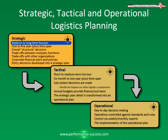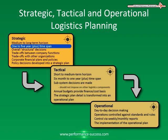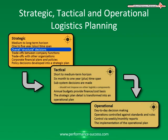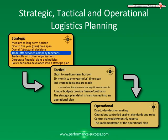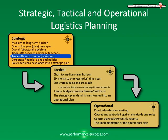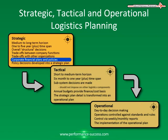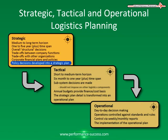In the strategic function, you have a medium to long range horizon, a one to five plus year time span. Overall structural decisions are made, you have trade-offs between company functions and trade-offs with other organizations, corporate financial plans and policy, and policy decisions are developed into a strategic plan.